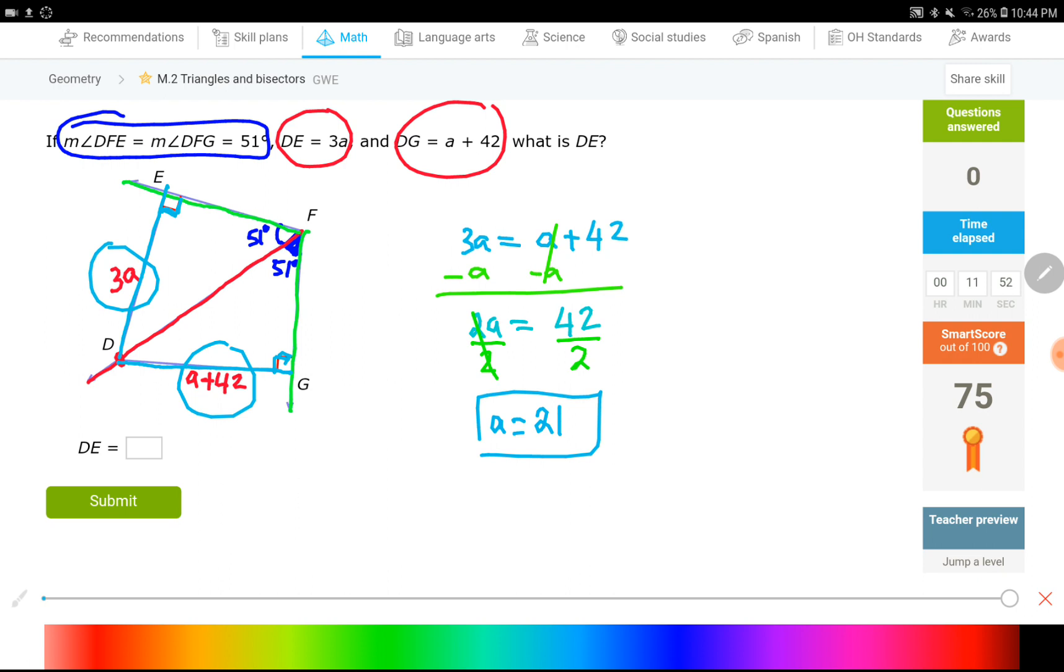A would be 21. But, that's not my question. My question is, what is DE? So, let's just rewrite this DE over here. It was equal to 3A, which means 3 times A. 3 times, we just figured out that A equals to 21. I plugged it in. Multiply these two. The answer would be 63. So, that side, or that segment, would be 63 units.